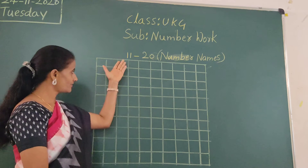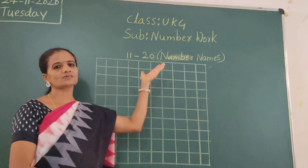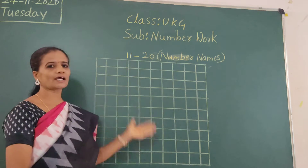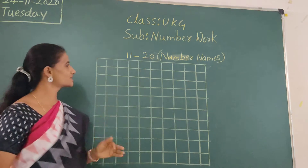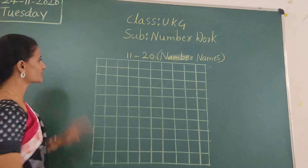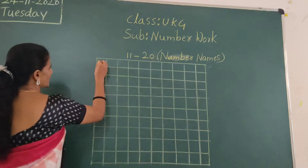So 11 to 20 also, we finished. Today I will revise once. Okay children? So take out your number 1 squared book.